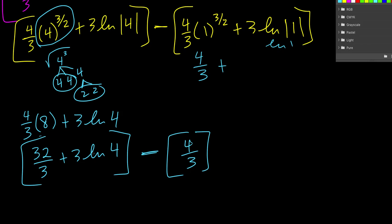So now we're just going to do 32 minus 4. That's going to give us 28 thirds plus 3 natural log of 4.